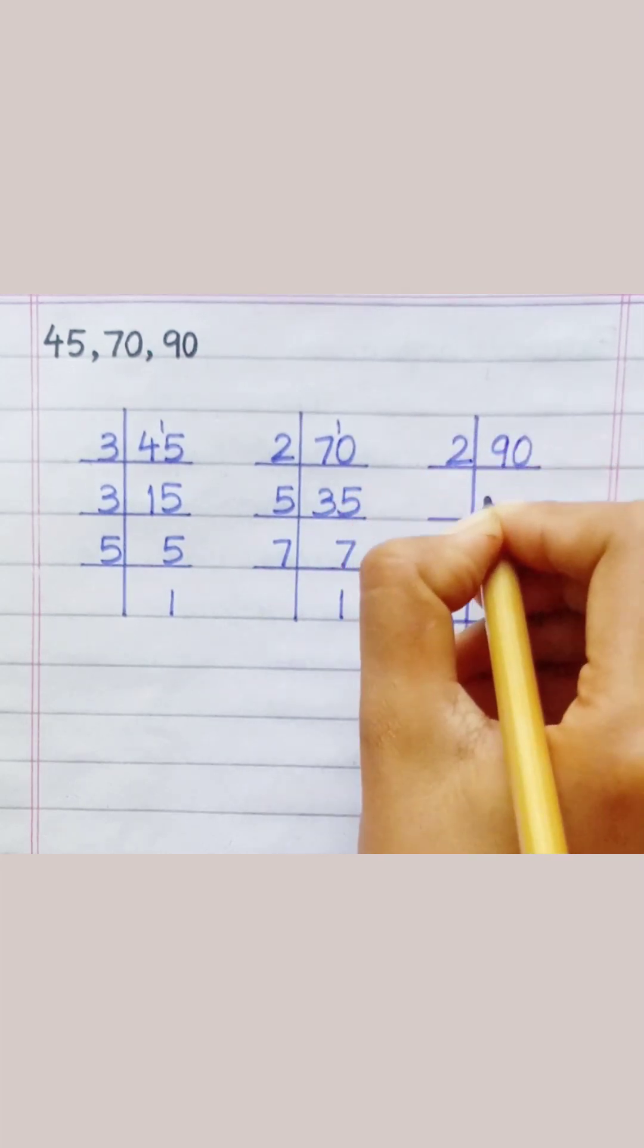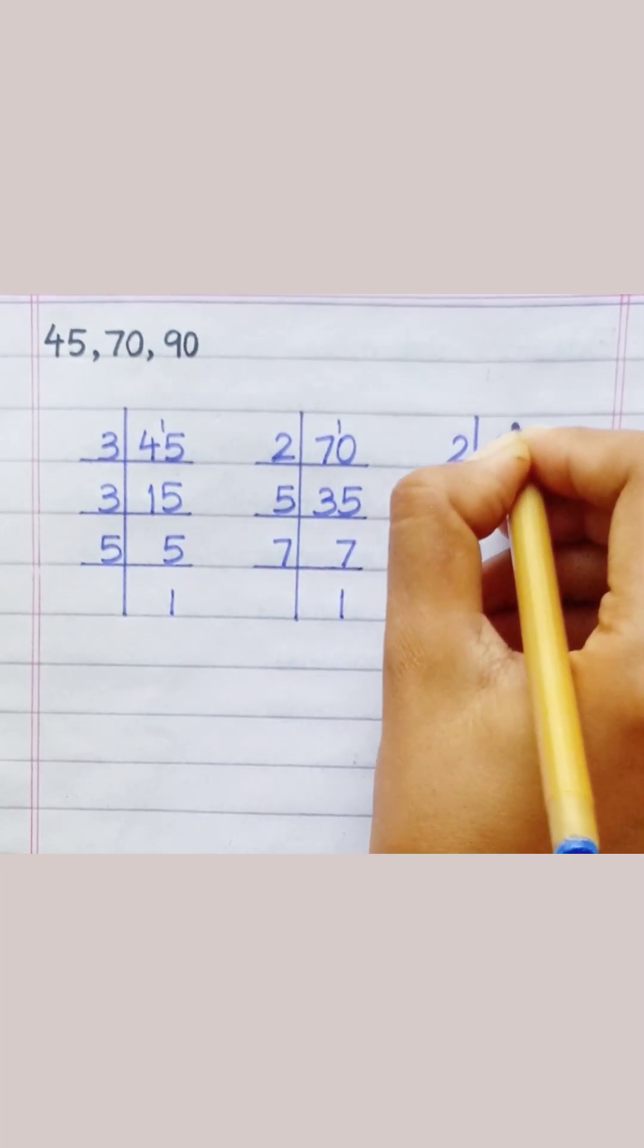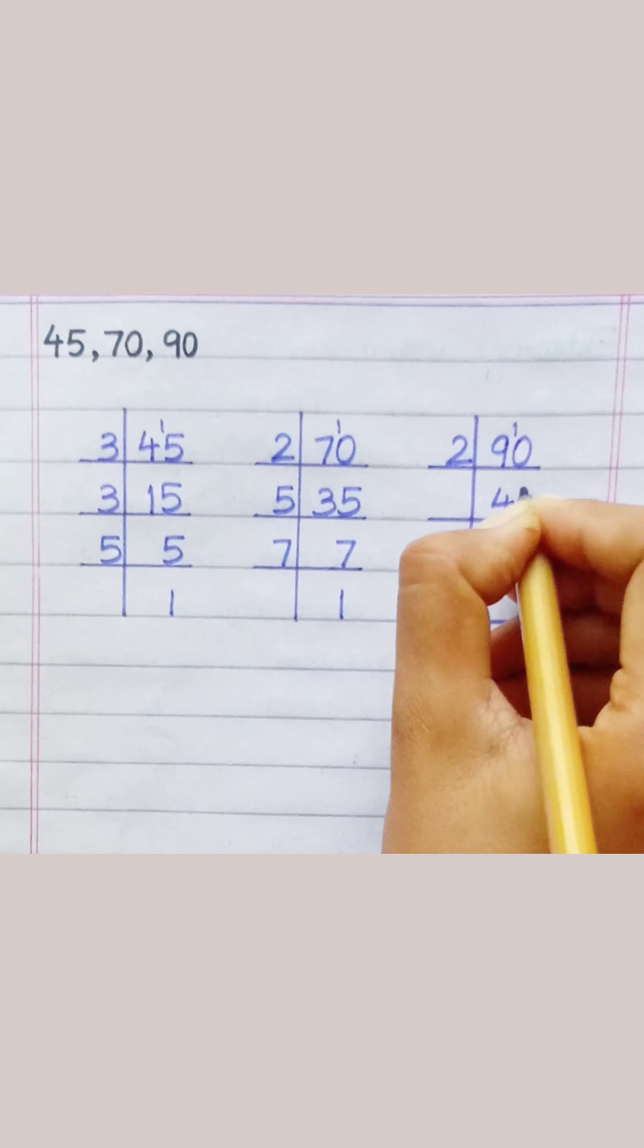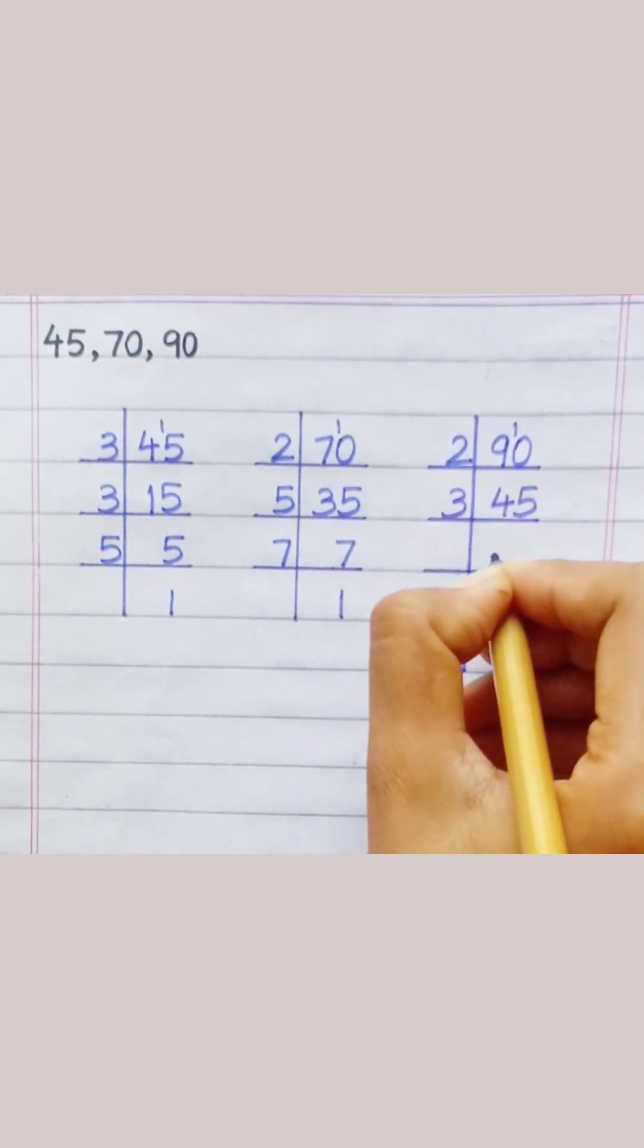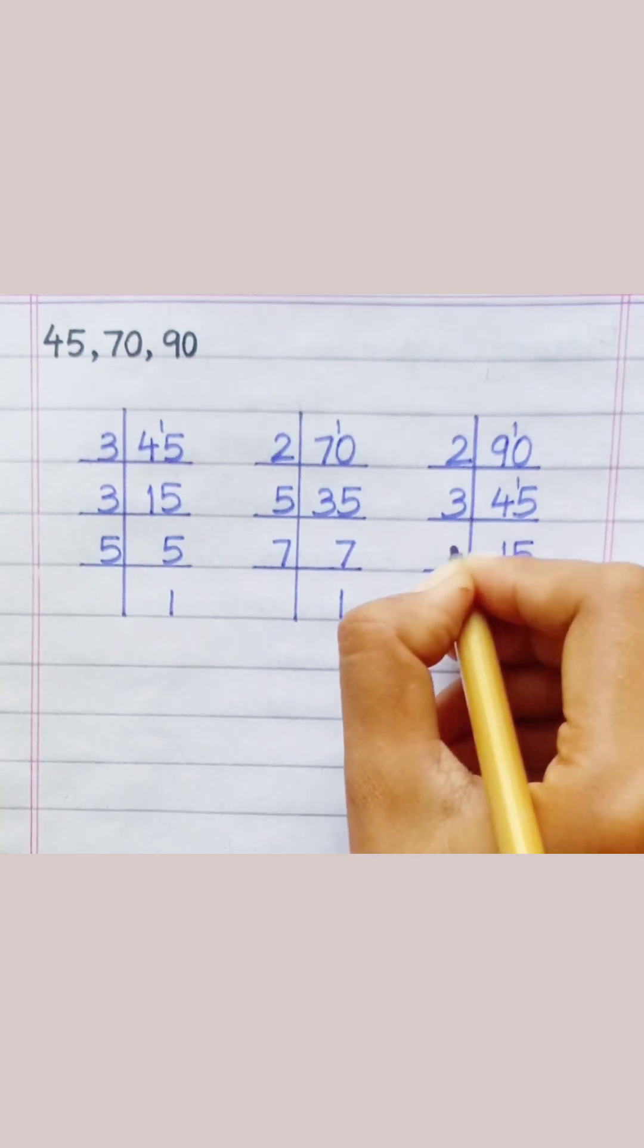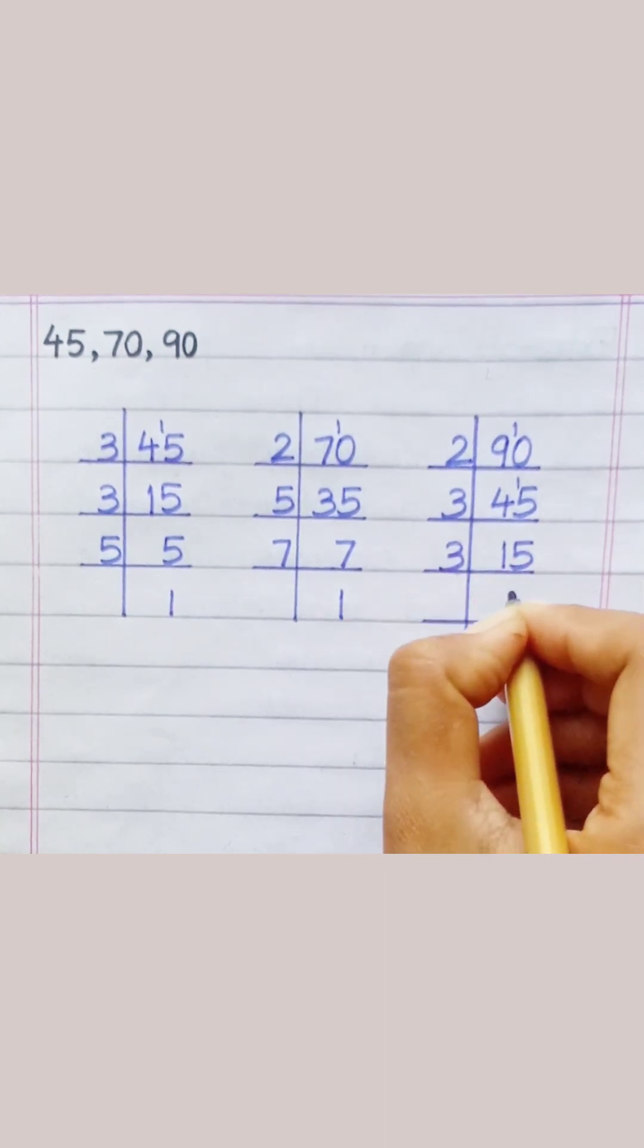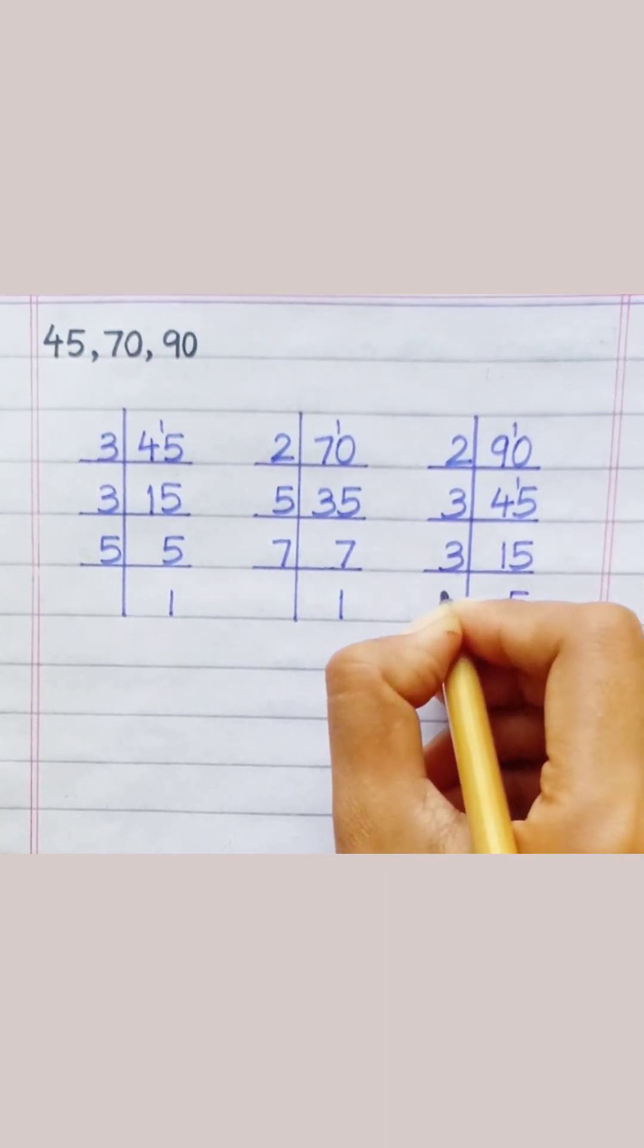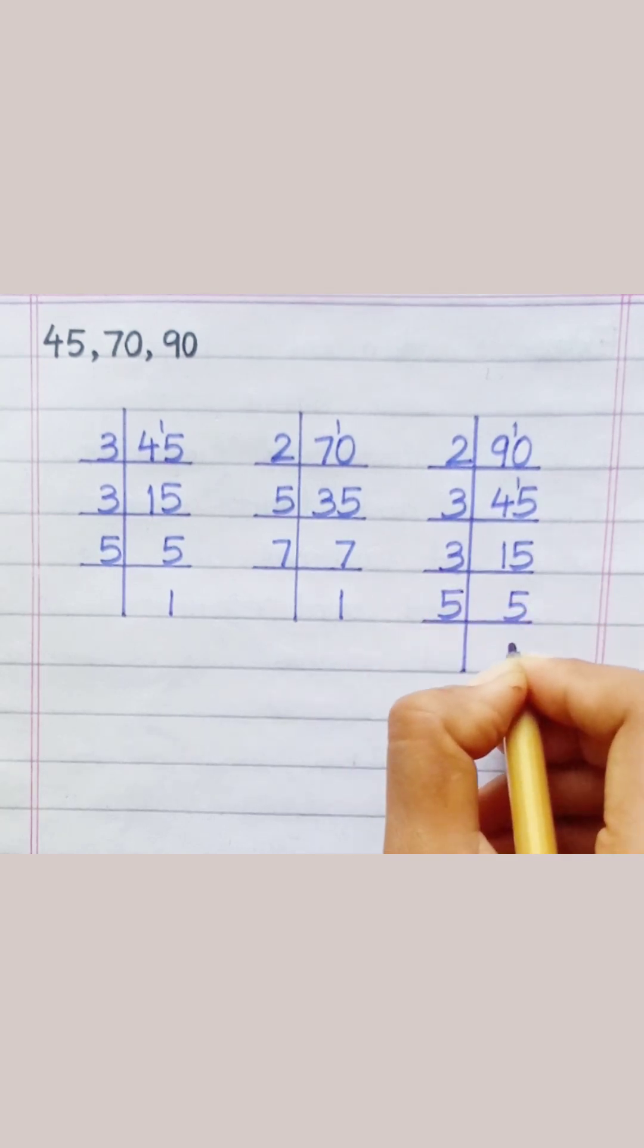Ninety. Two fours are eight. Two fives are ten. Three ones are three. Three fives are fifteen. Five ones are five.